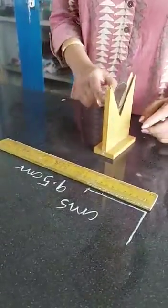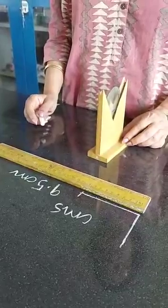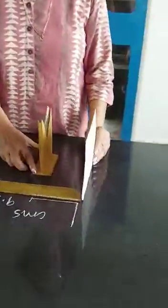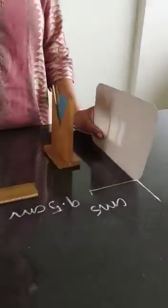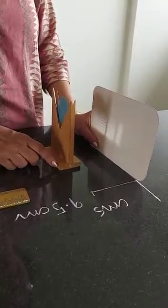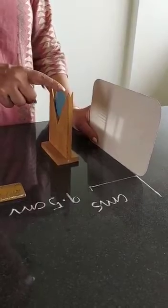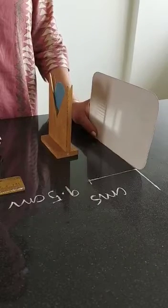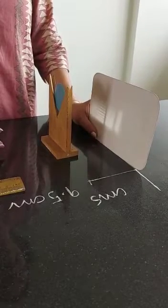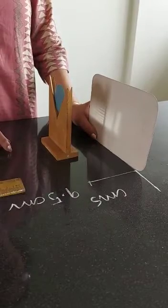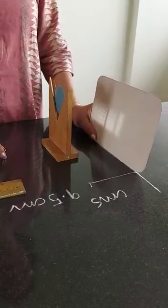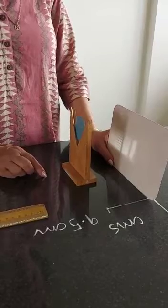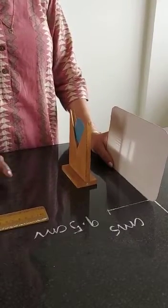So the focal length of this concave mirror will be 9.5 centimetres. The observation is: the distance between the screen and the mirror is 9.5 centimetres. The conclusion is: the focal length of the concave mirror is 9.5 centimetres. Please remember, you have to measure only in centimetres. And don't give a decimal like 9.35 — either you take 9, or 9.5, or 10, or 10.5. Take it in 0.5 increments for the focal length.